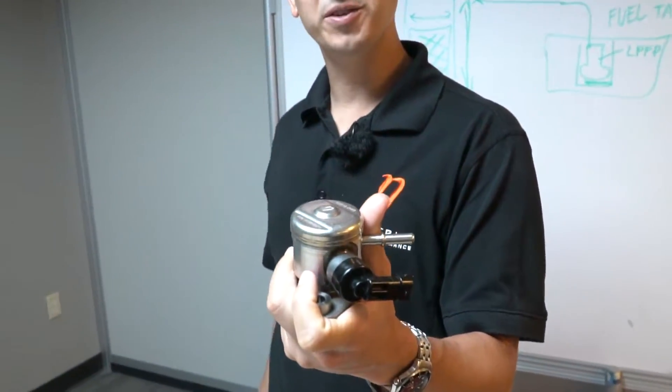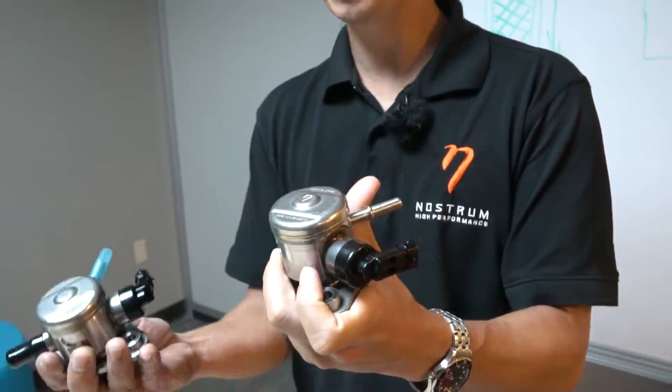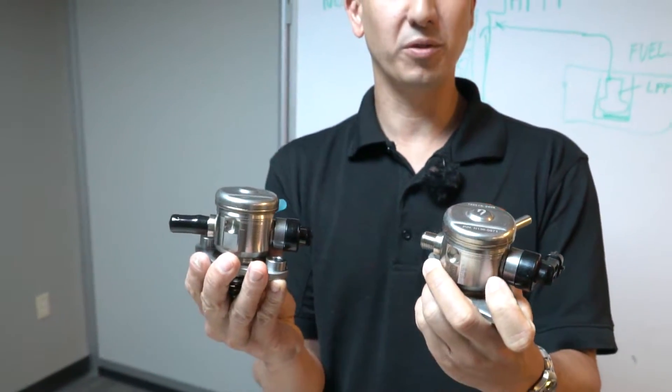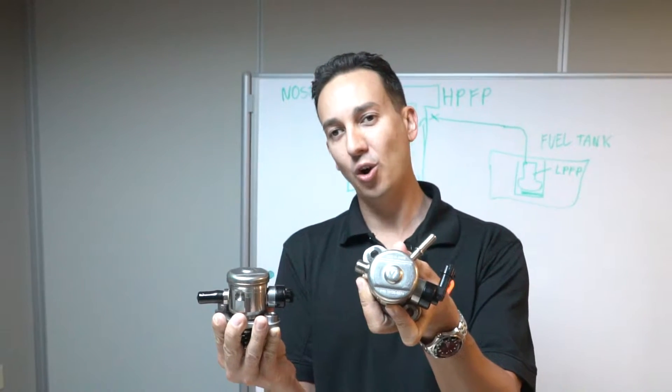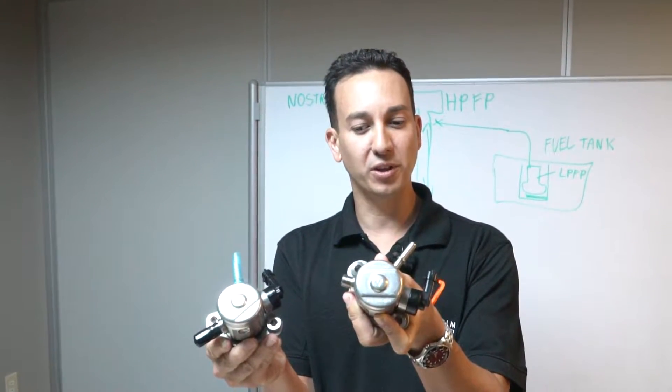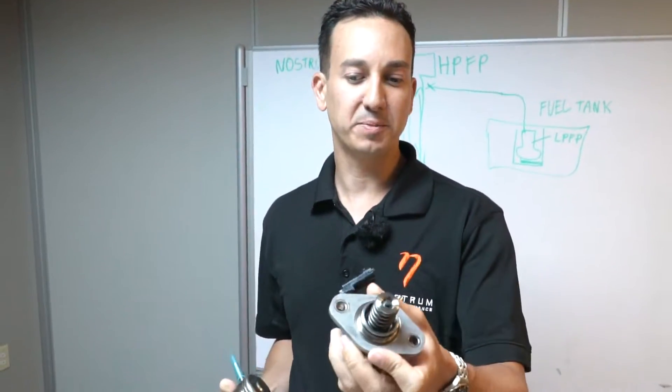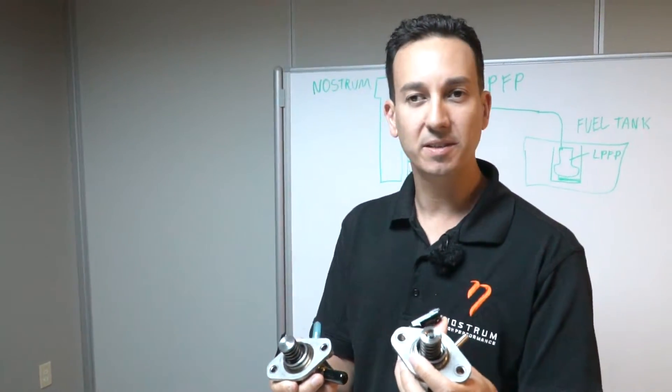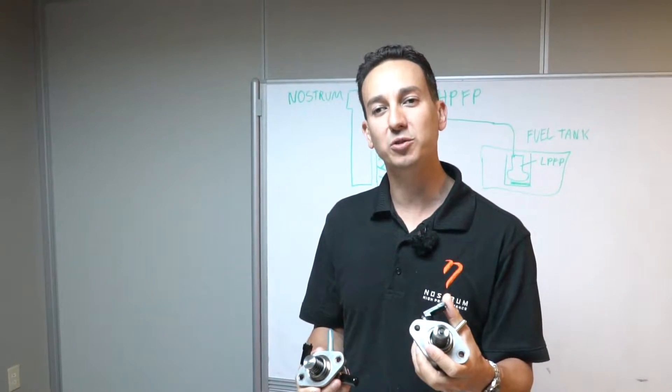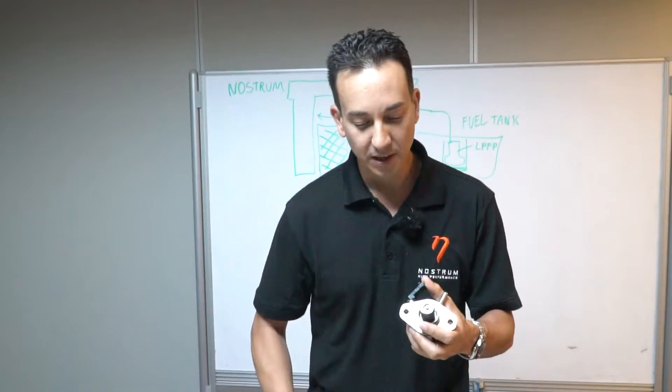The Nostrum High Performance Fuel Pump looks extremely similar to the OEM Subaru Fuel Pump, which I'm holding in my right hand. In fact, besides the logo that you can see stamped on the back of the Nostrum Pump and the spring retainer and cap, the pumps are identical. And this is of course by design, because we always strive to have direct drop-in replacement fuel systems.